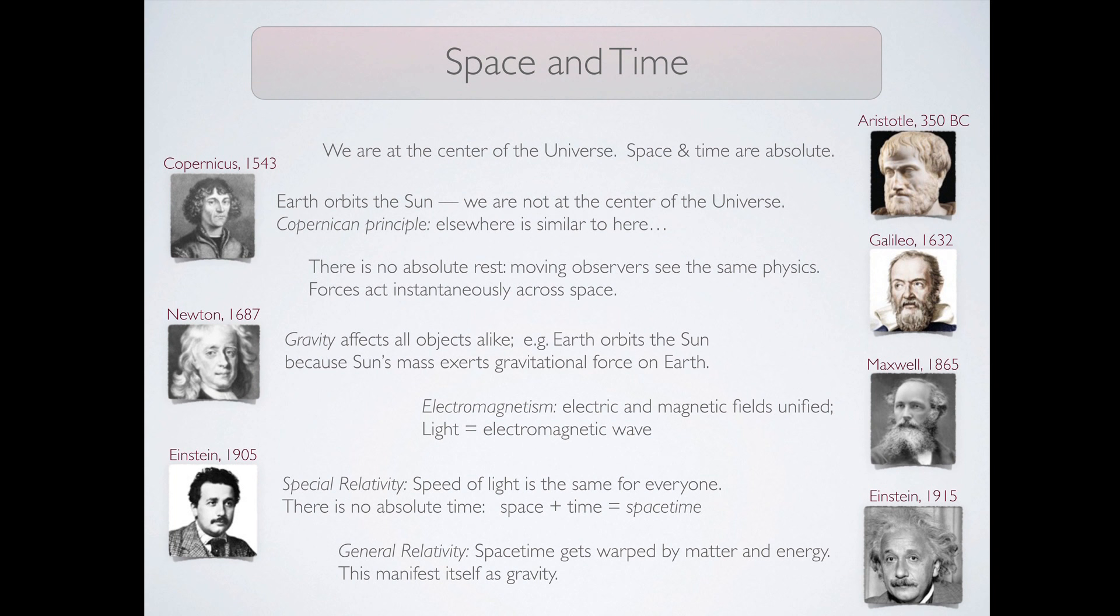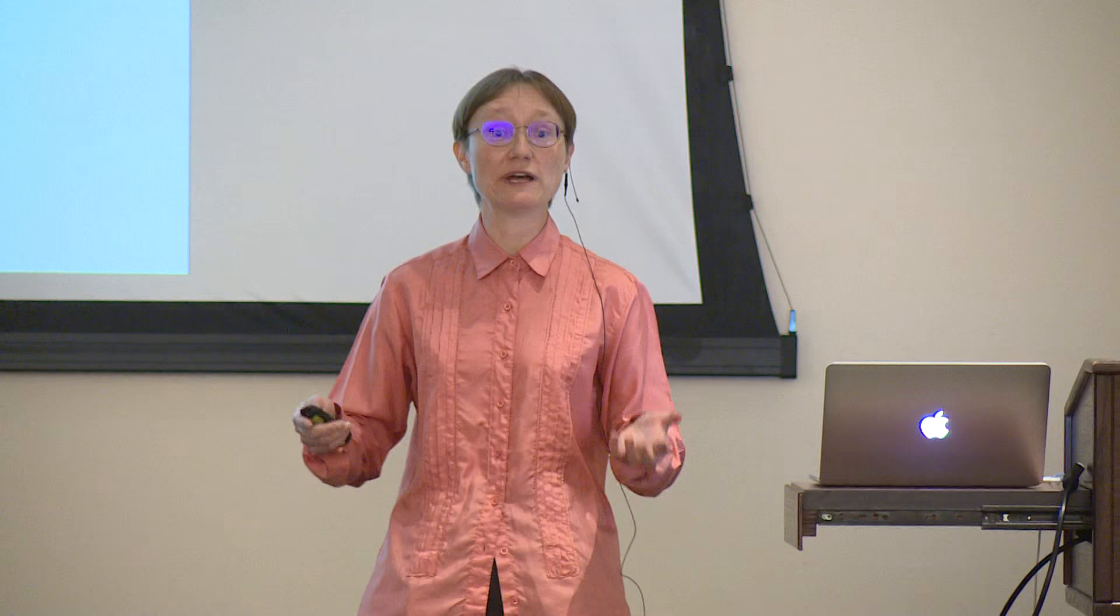But in order to do that, I need to tell you how we think about our concept of space and time. According to the Aristotelian view, space and time were absolute, and we were at the very center of the universe with all the heavenly bodies orbiting around us. This view started changing in the Renaissance, when Nicholas Copernicus proposed a model with the sun at the center with the earth orbiting around it. That led to the first scientific revolution, and eventually to the Copernican principle, which says that our position in the universe is nothing special, and other places look pretty much like they do here.